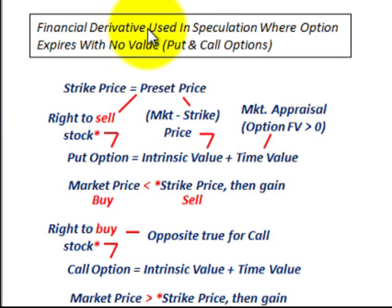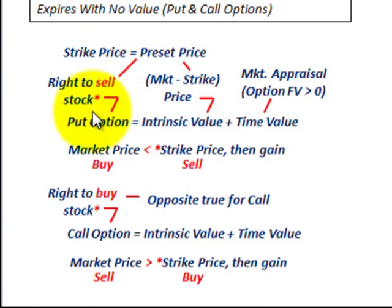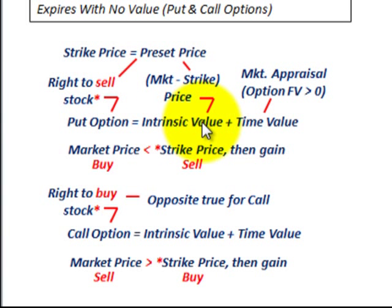We're going to be looking at financial derivatives used in speculation where the option expires with no value — specifically a basic put and a call option. Starting with the put option, that gives you the right to sell some stock at a preset price called the strike price. Options are broken down into two elements: the intrinsic value portion and the time value portion.